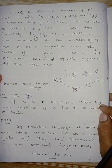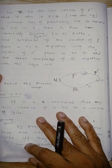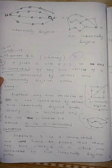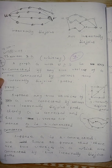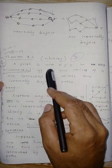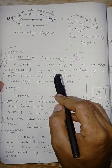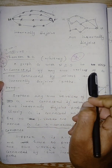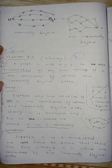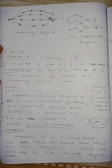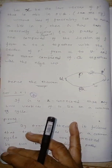Whitney's theorem statement: A graph G with number of vertices greater than or equal to 3 is 2-connected if and only if any two vertices of G are connected by at least 2 internally disjoint paths. That is called Whitney's theorem.